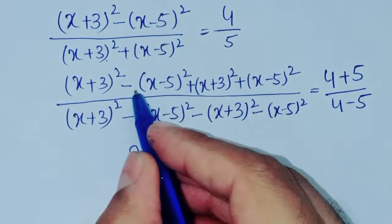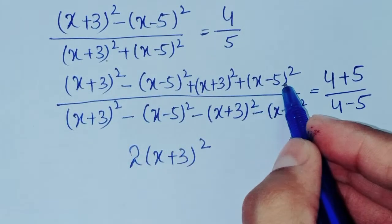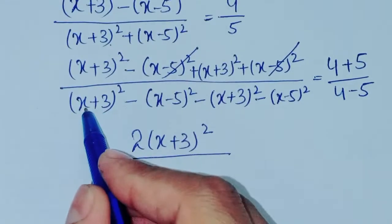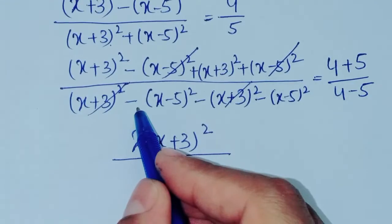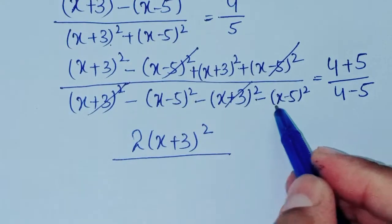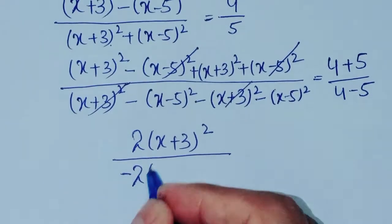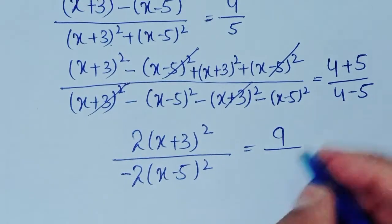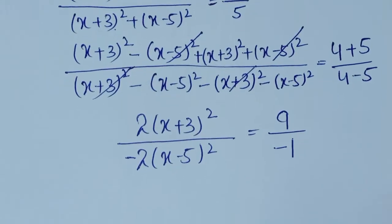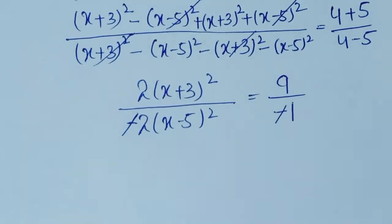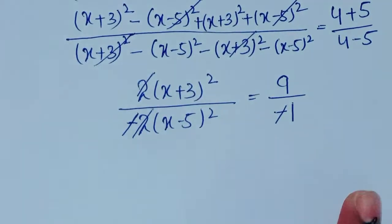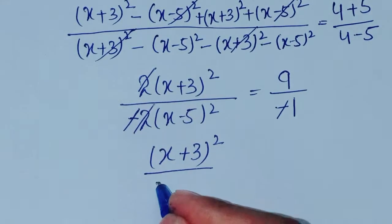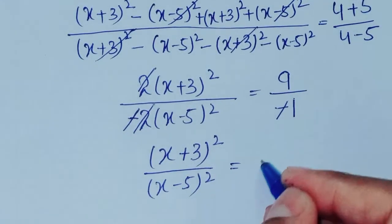Now x plus 3 whole square and x plus 3 whole square give 2 times x plus 3 whole square; the x minus 5 terms cancel each other. Then minus x minus 5 whole square minus x minus 5 whole square gives minus 2 times x minus 5 whole square. This equals 4 plus 5 which is 9, over 4 minus 5 which is minus 1. The minus signs and the 2s cancel, giving x plus 3 whole square over x minus 5 whole square is equal to 9.